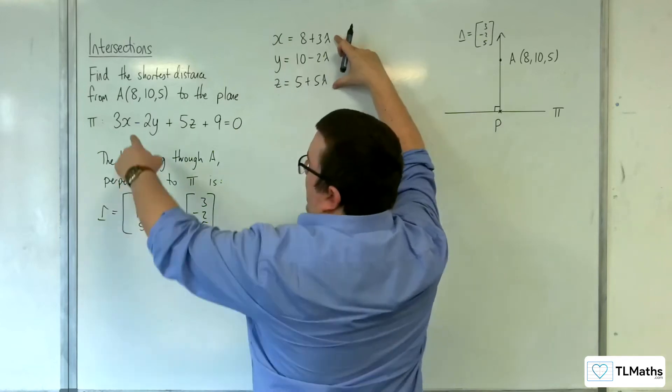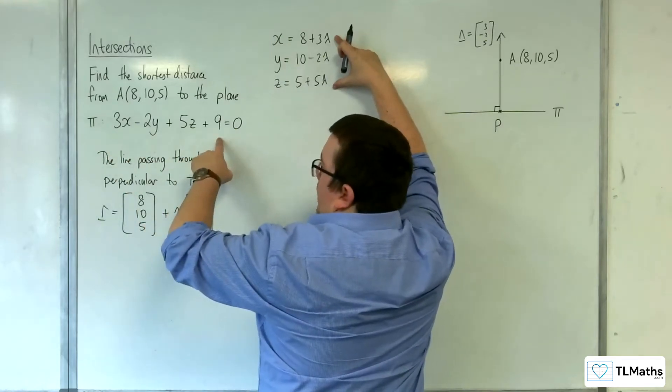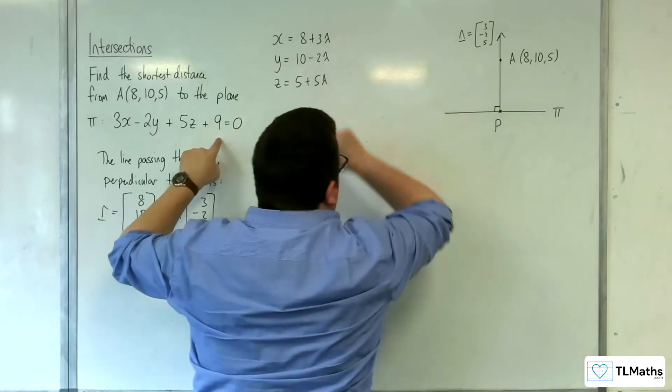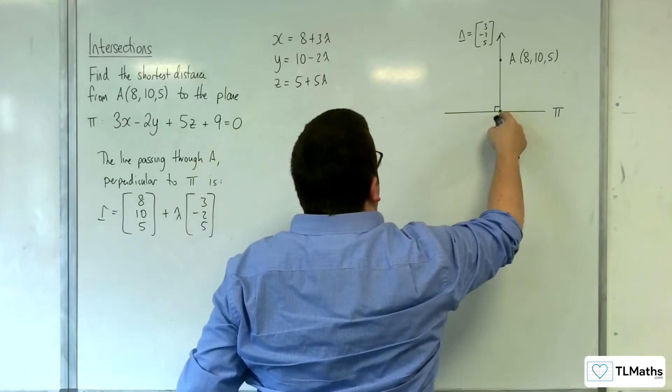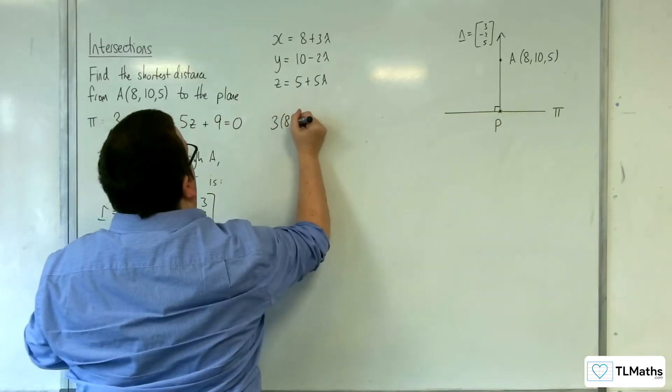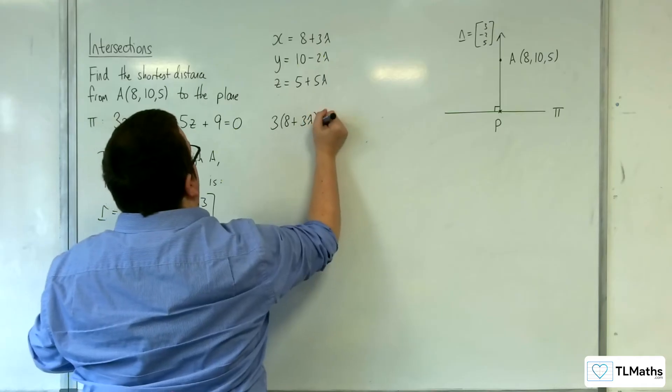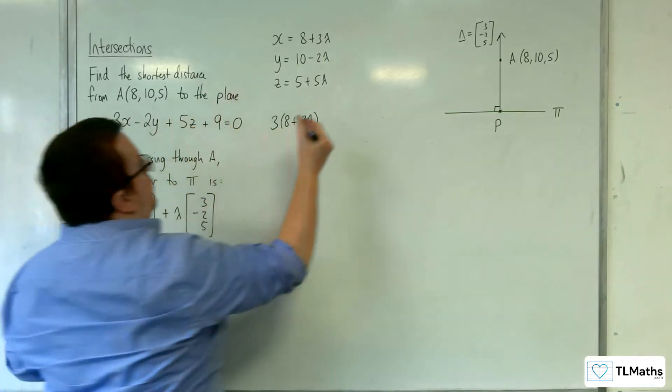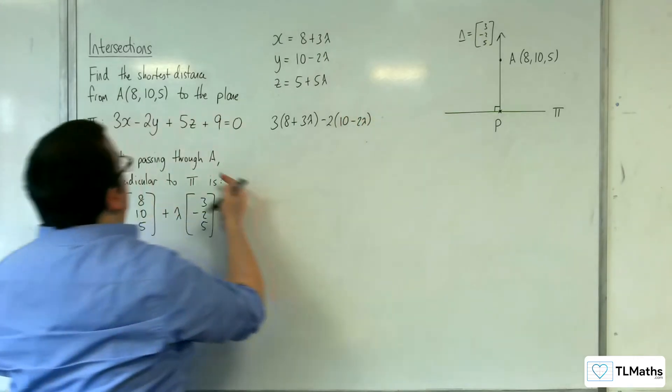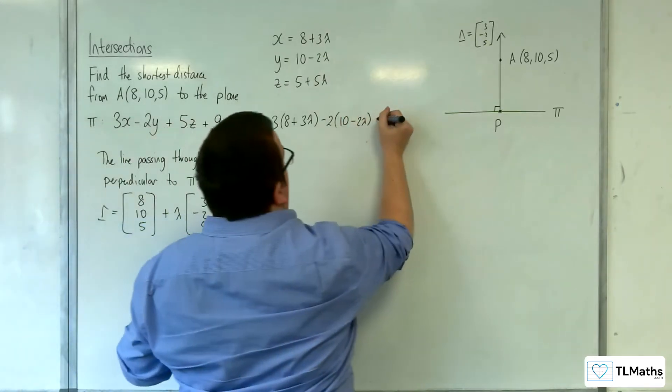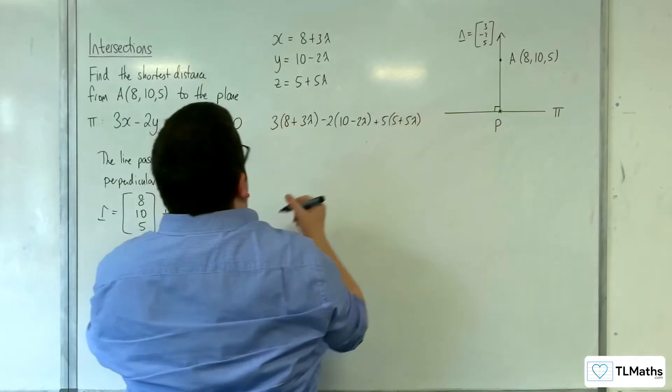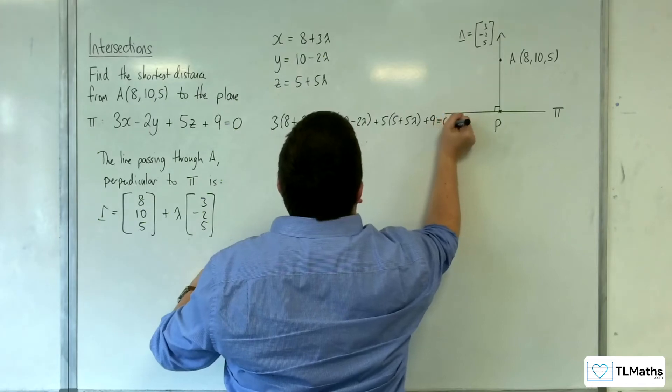I can substitute those into this equation and then work out the value of lambda, and that will give me the value of lambda that will give me point P. So 3(8 + 3λ) - 2(10 - 2λ) + 5(5 + 5λ) + 9 = 0.